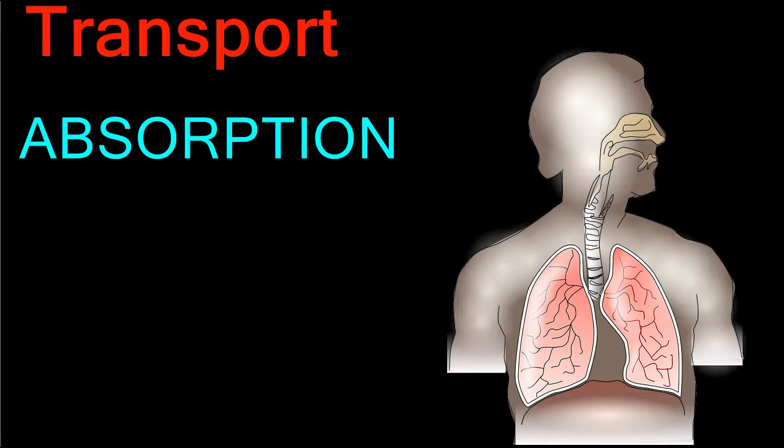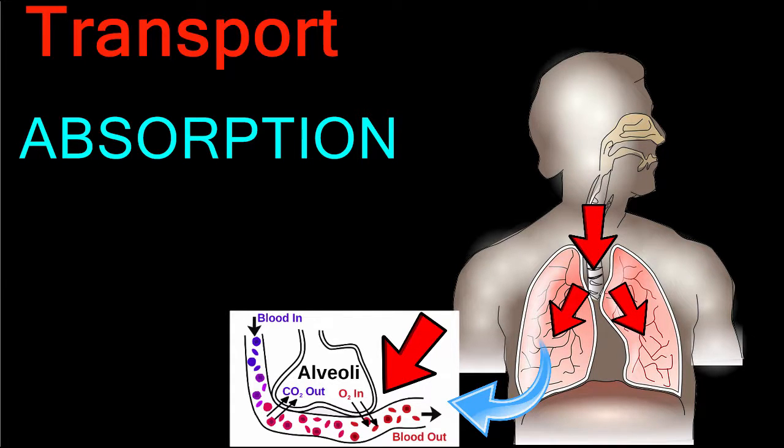Absorption also occurs in the lungs, so the oxygen you inhale can enter the bloodstream. Once a substance is absorbed by the body, it must be circulated around the body so that all the cells have access to it.